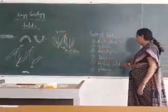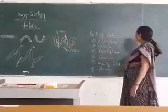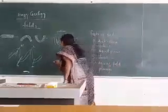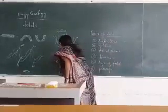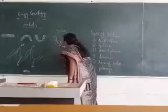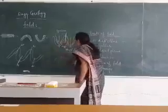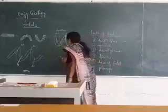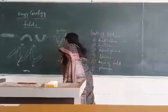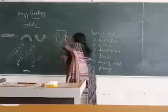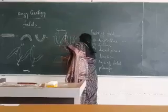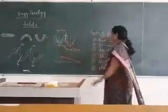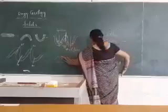Axis of fold — the axis of fold is when the fold is inclined, the intersection between the sloping sides of a rock band. That is known as the axis.